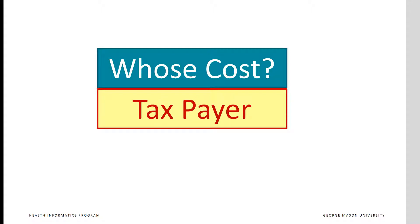Any cost analysis can take many different perspectives. We took the perspective of taxpayers, which included costs to the criminal justice system for recidivism, as well as additional crimes, costs to the public treatment system including frequency of relapses and repeated treatments, and costs to unemployment benefits, and so on.